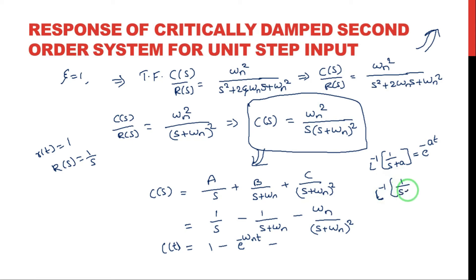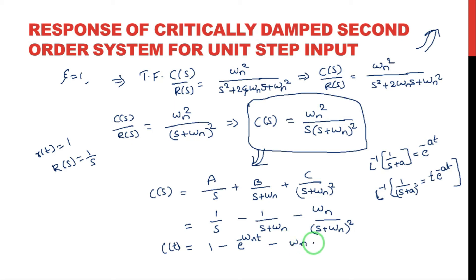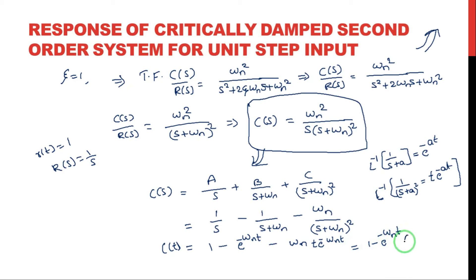The inverse Laplace of 1/(s+a) squared equals t * e^(-at). So the term gives minus omega_n * t * e^(-omega_n * t). Finally, combining terms, c(t) equals 1 minus e^(-omega_n * t) multiplied by (1 + omega_n * t).